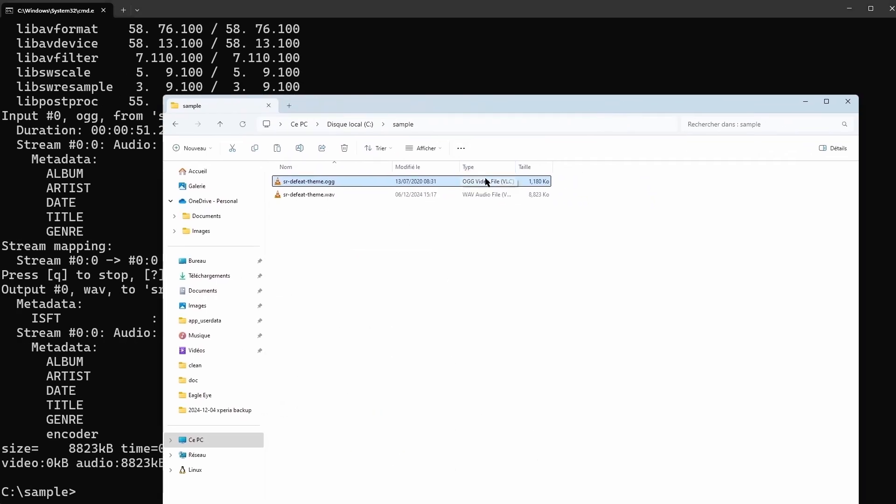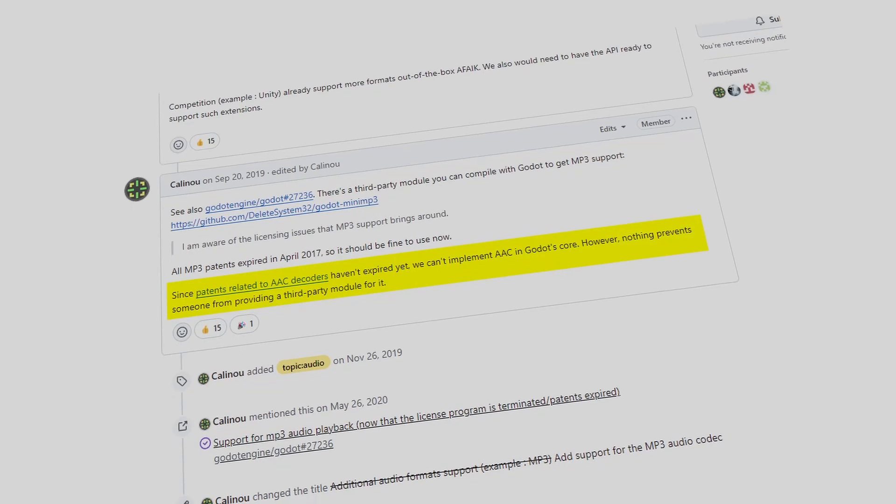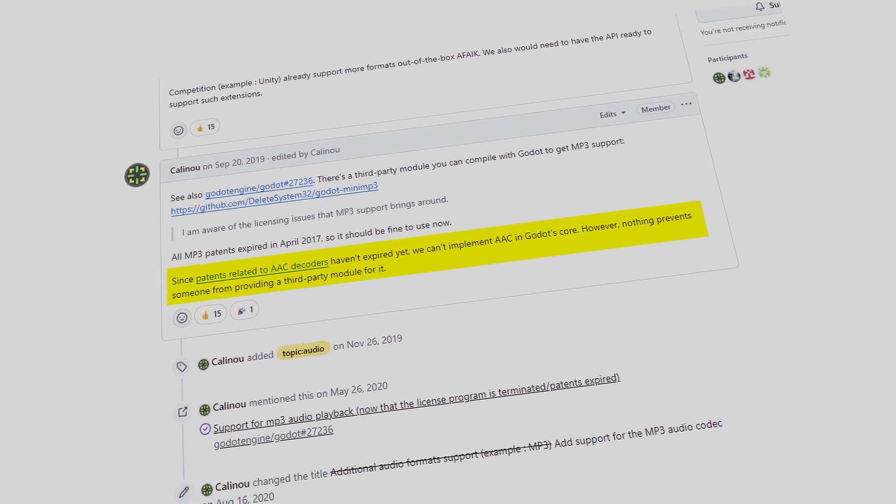Another one you might hear about is AAC. That's more for like other engines and stuff. Because it's a proprietary format, it cannot be included in the base open source distribution of Godot. So my recommendation would be just to use OGG or WAV file for very small sound effects.